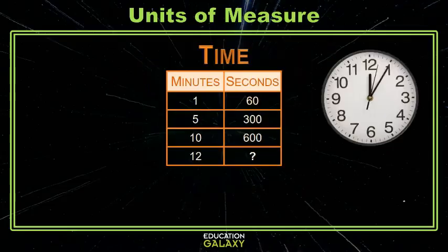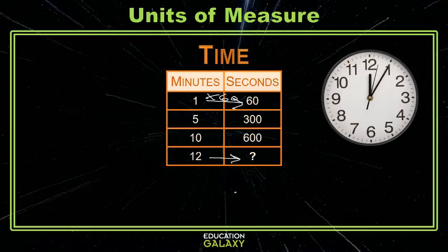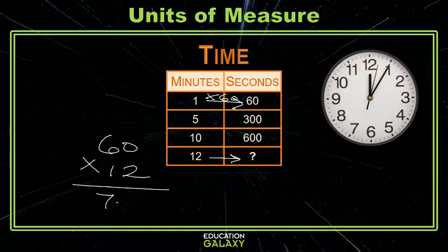Do you have the time for one more sample? Here we're going to do minutes and seconds. To get from minutes to seconds, we need to multiply by 60. So to get from 12 minutes to seconds, we multiply by 60. 60 times 12 is 720. So 720 seconds equals 12 minutes. There you have it — you too can convert units of measure.